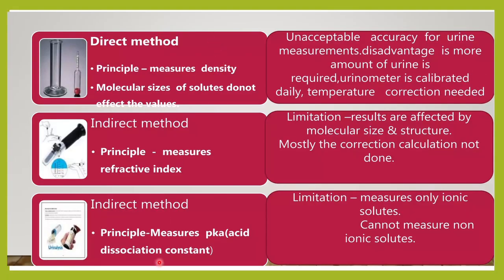These are the various methods to measure specific gravity. The urinometer's drawback is that a large amount of urine is needed, calibration is required, temperature correction is needed, and dilution factor correction is needed. The refractometer's advantage is that only one or two drops of urine is sufficient, but the results are affected by the molecular size and structure of the solutes. The reagent strip is very easy to handle and very easy to read, with very little urine required.